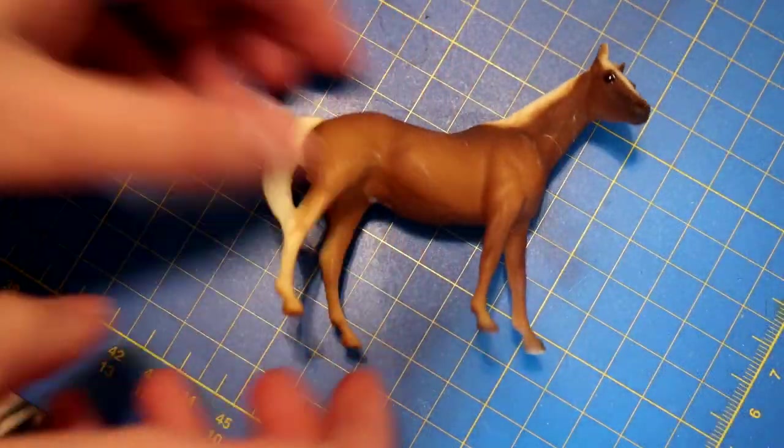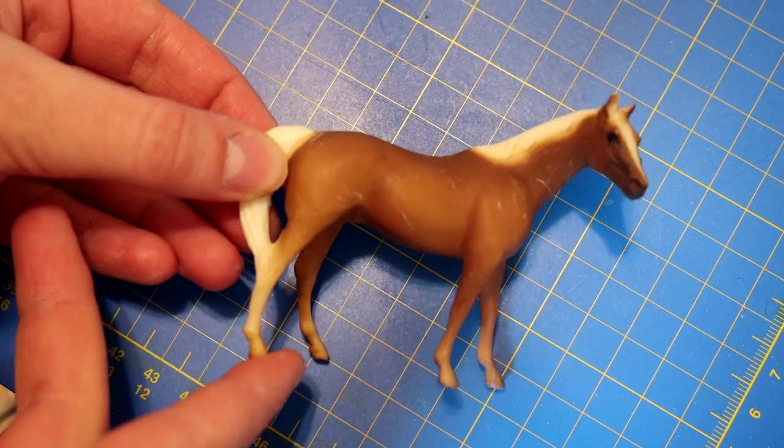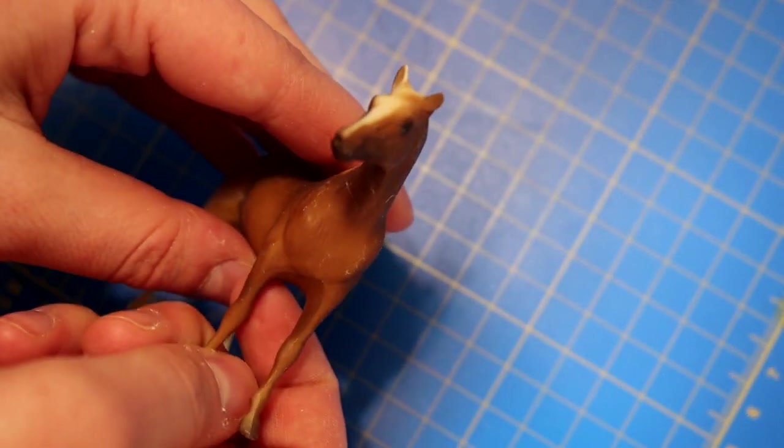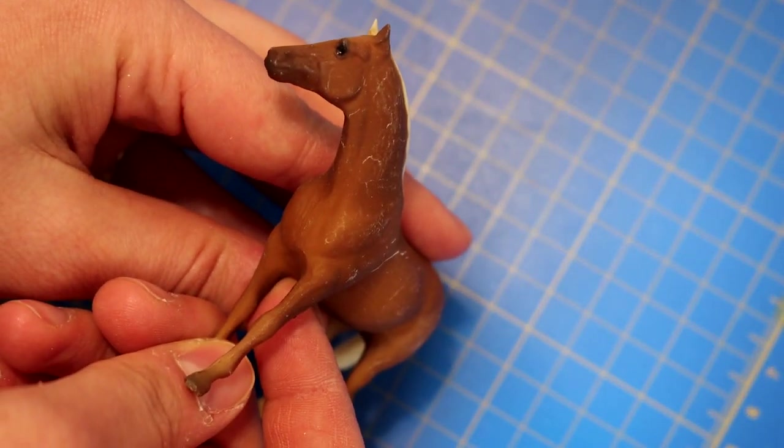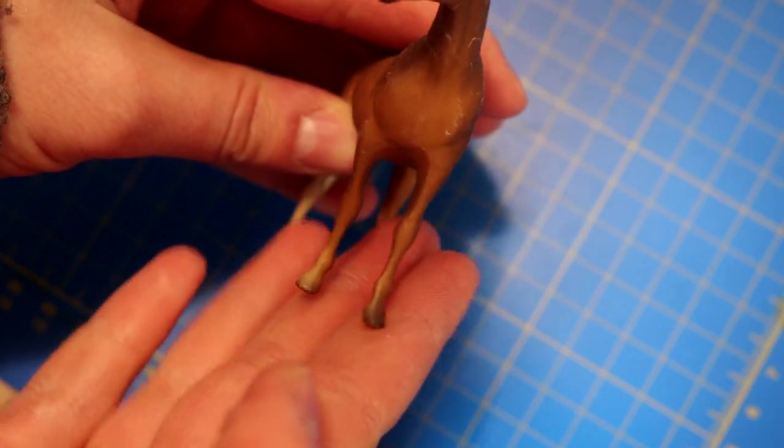Generation 1 stablemates are the oldest of the Breyer stablemate collection and you identify them by the thin legs, small hooves, and large seams. These guys lack detail in the face and body structure but are quite realistic in proportion.